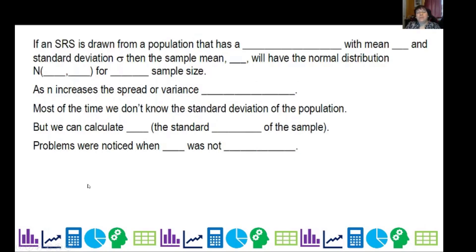If I draw a sample from a population that has a normal distribution with a mean mu and standard deviation of sigma, then X bar will have the normal distribution where you have X bar and S for n sample size. Now as n gets bigger, the spread or variance decreases because the better the sample size, the tighter our distribution.